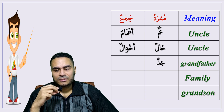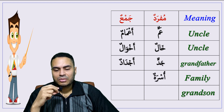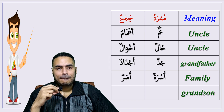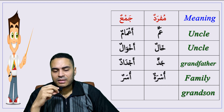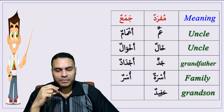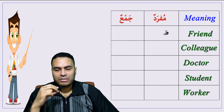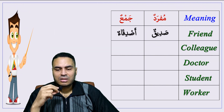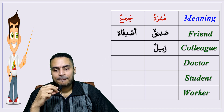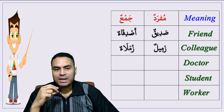Grandfather — jaddun, plural: ajdad. Family — usratun, plural: usar. Grandson — hafidun, plural: ahfad. Friend — sadiqun, plural: asdiqa'. Colleague — zamilun, plural: zumala'.